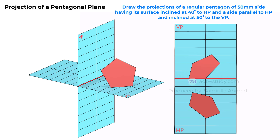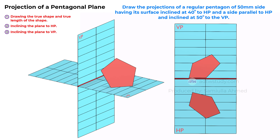Steps in the drawing: 1. Drawing the true shape and true length of the shape. 2. Inclining the plane to HP. 3. Inclining the plane to VP.